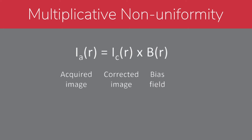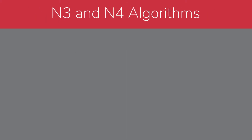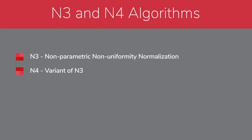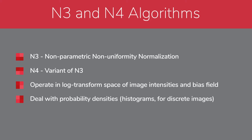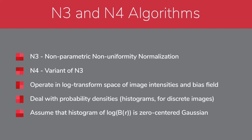To find the corrected image, we need to estimate the bias field. Here we will briefly explain the main internal steps of these algorithms and apply these methods to our liver MRI dataset. We will start with the N3 and N4 methods. N3, or non-parametric non-uniformity normalization, is the most commonly used non-uniformity correction method. The N3 method and its variant N4 operate in the log transform space of the image intensities and bias field. These methods deal with probability densities or, for discrete images, intensity histograms. The histogram of the logarithm of the bias field is assumed to be a zero-centered Gaussian.